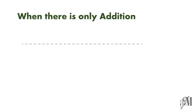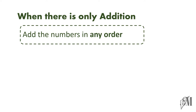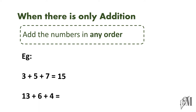I am going to discuss this under a few cases. The first case is when there is only addition. Simply we can add the numbers in any order. For example, 3 plus 5 plus 7: 3 plus 5 is 8, 8 plus 7 is 15. The same answer you get even if you do it the other way around: 7 plus 5 is 12 and 12 plus 3 is 15. So while adding, when there is only addition, you can follow any order. Another example: 13 plus 6 plus 4 gives you 23. 13 plus 6 is 19, 19 plus 4 is 23. Similarly, 4 plus 6 is 10, 10 plus 13 once again gives you 23. So this can be done in any order.